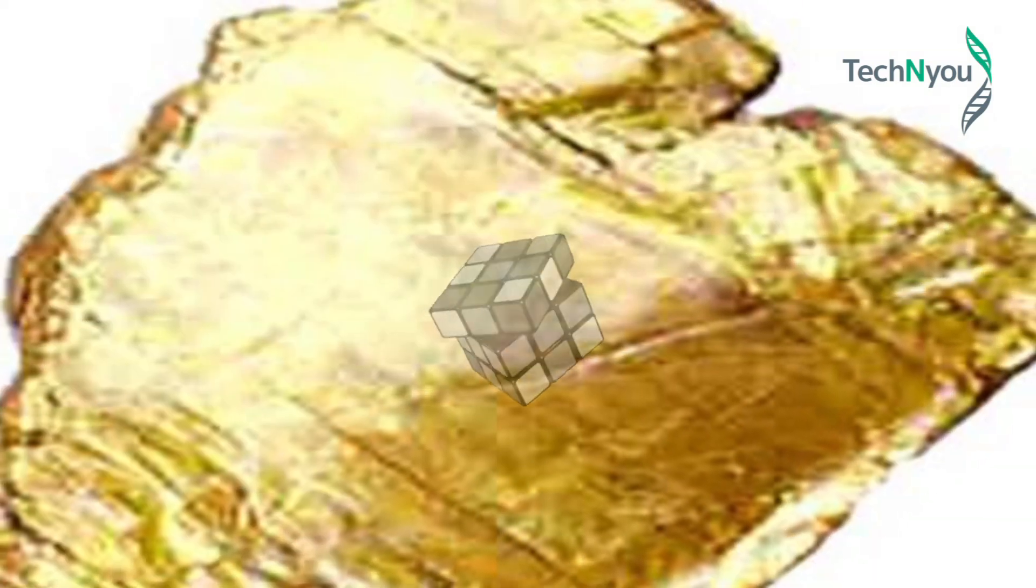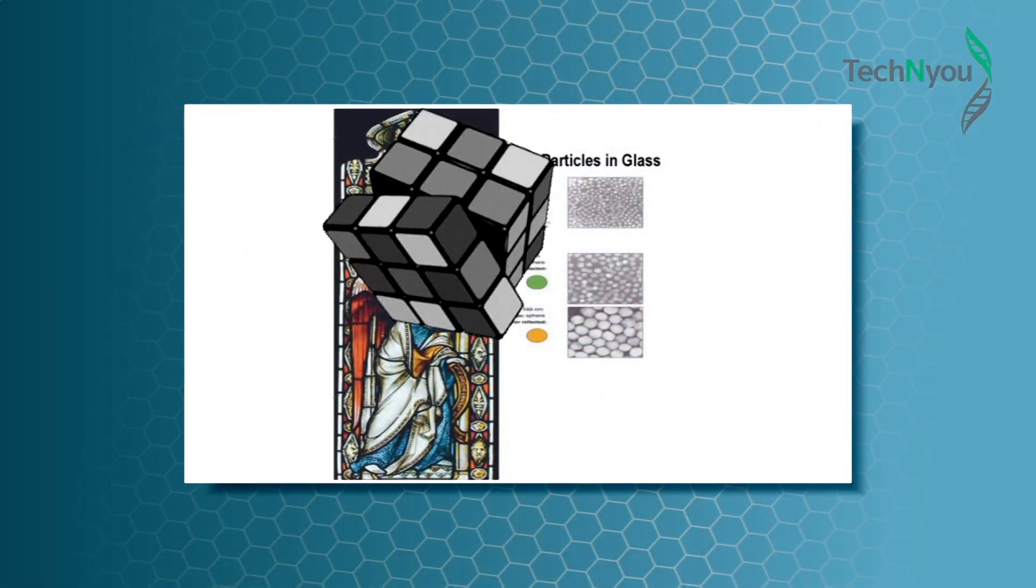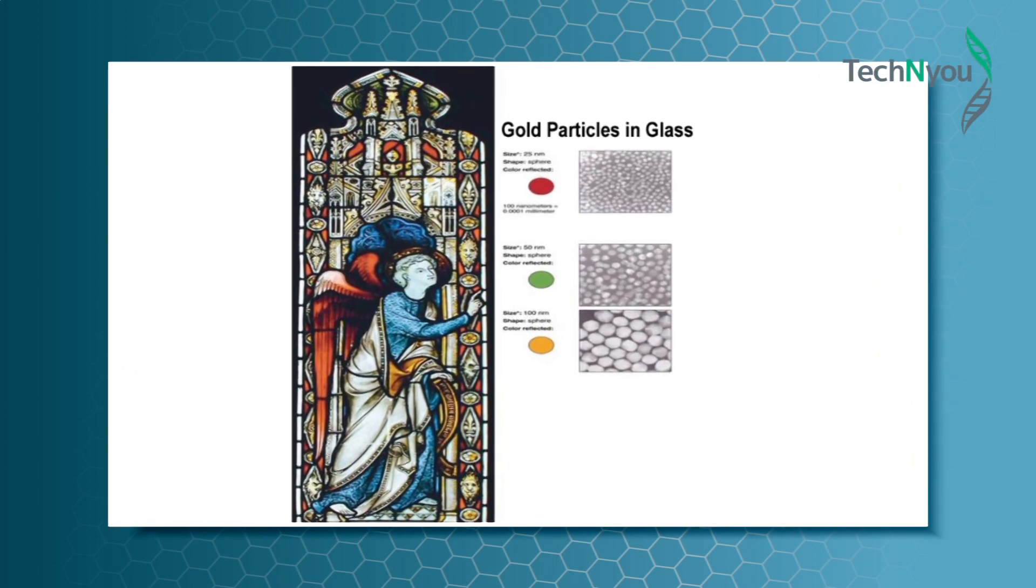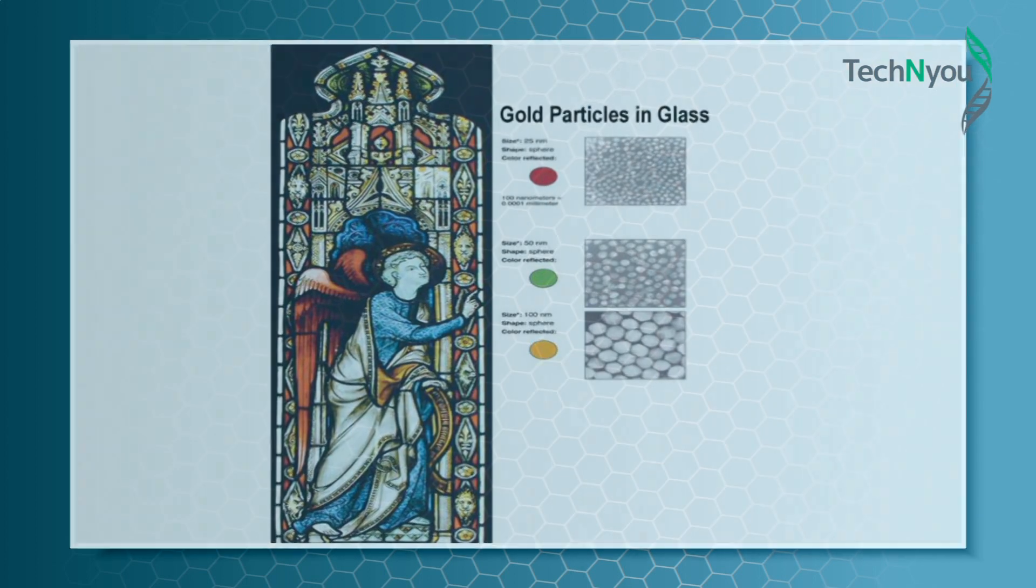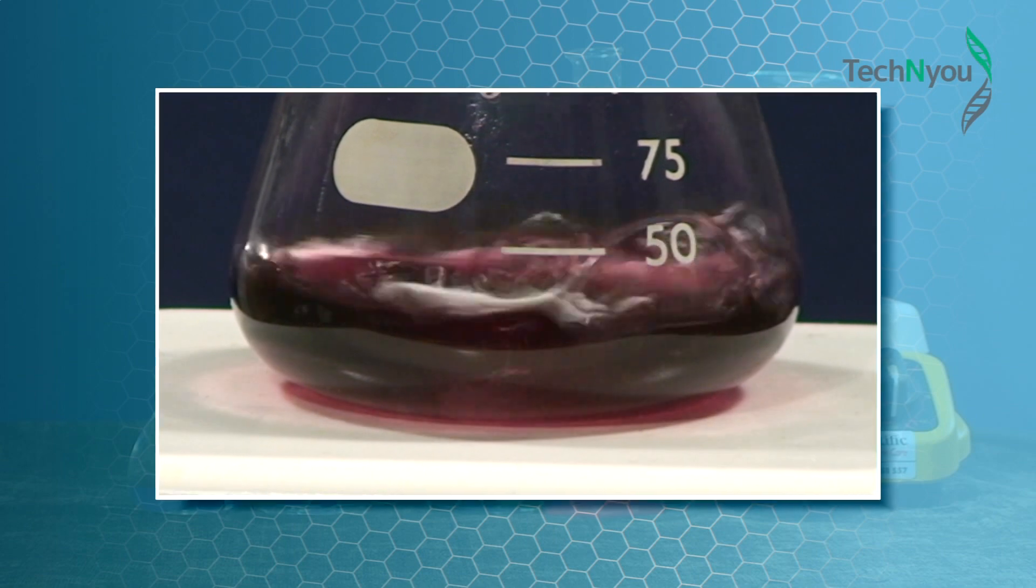Nanoparticles often exhibit different characteristics from the bulk form of the element because of their size and greater surface area to volume ratio. Color changes at the nanoscale directly relate to the size of the nanoparticle, a characteristic that is particularly evident in the synthesis of gold nanoparticles.